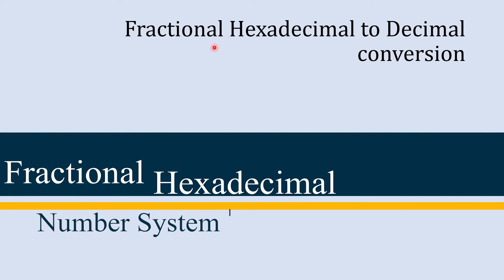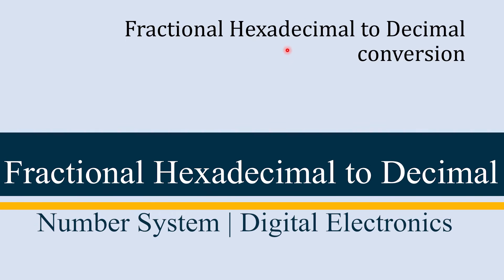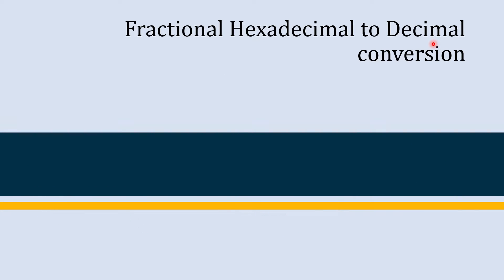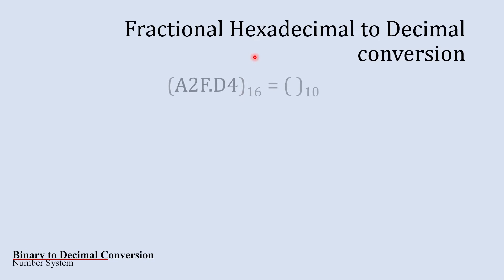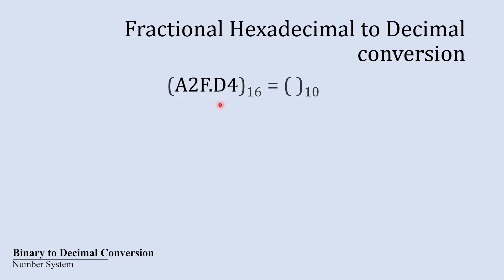In this section we are going to convert a fractional hexadecimal number into a decimal number. For that we are going to take a fractional hexadecimal number — and this is our fractional hexadecimal number.